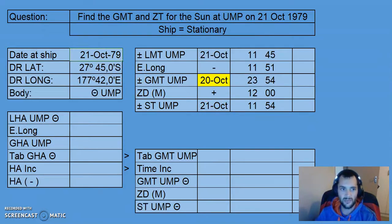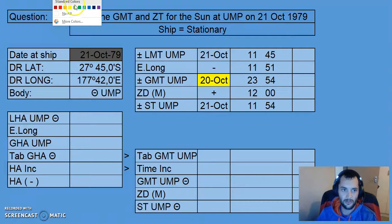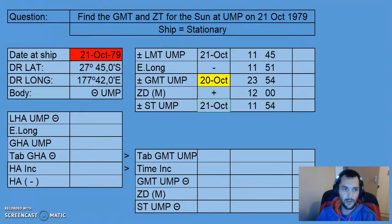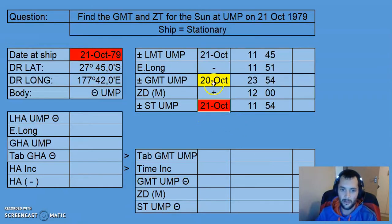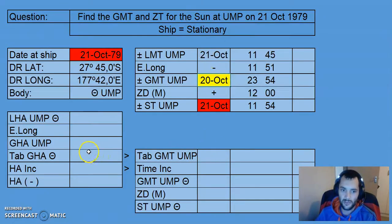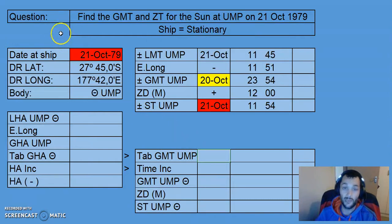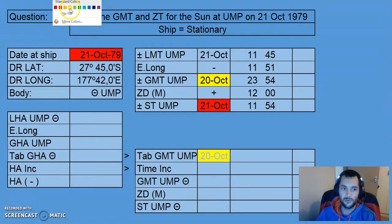Those two dates — the 21st of October at the ship and the 21st of October given in the question — must always be the same. The 20th of October on the GMT side will always correlate with the GMT date, and that is also the date we will use when going into the Almanac for our angle calculations.